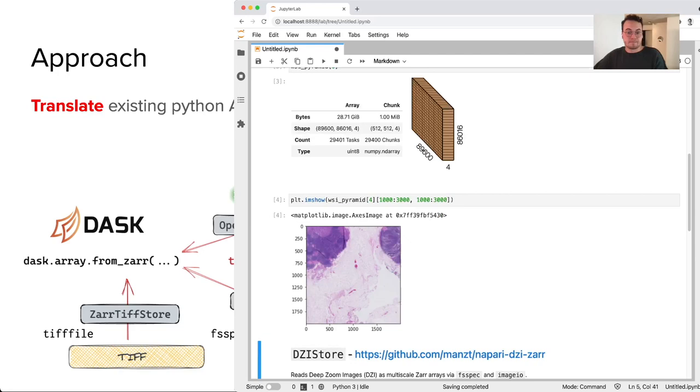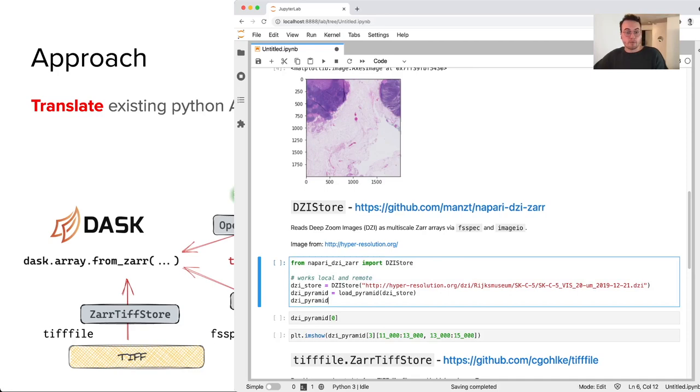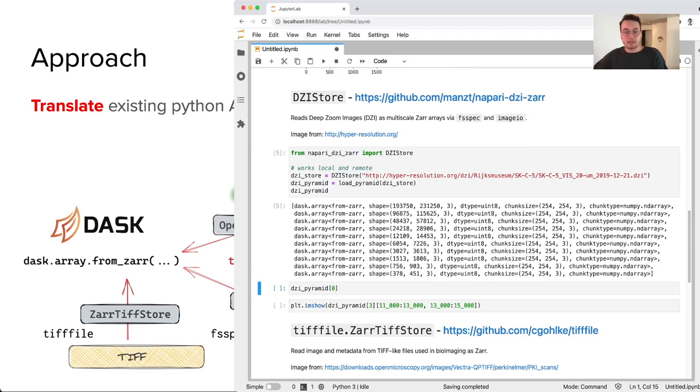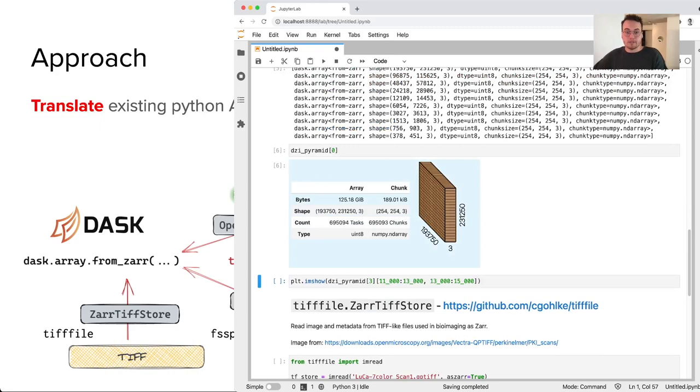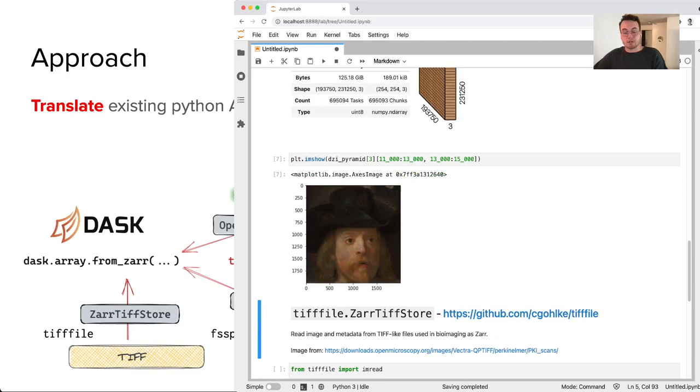Similarly, I can take the DeepZoomImageStore, and for a remote DeepZoomImage, I can load the image pyramid. Again, I can inspect the highest resolution. This one is much larger, 125 gigabytes in memory. And again, I can draw a particular region from a different level of that image pyramid.